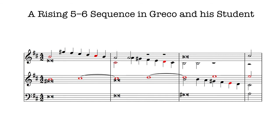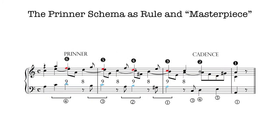It's indeed masterful and shows how students can often outstrip their teachers. In another passage in Pergolese's early mass, we find a large printer schema, each stage of which is decorated with 9-8 suspensions. Here is that same pattern from one of the rules of Durante.